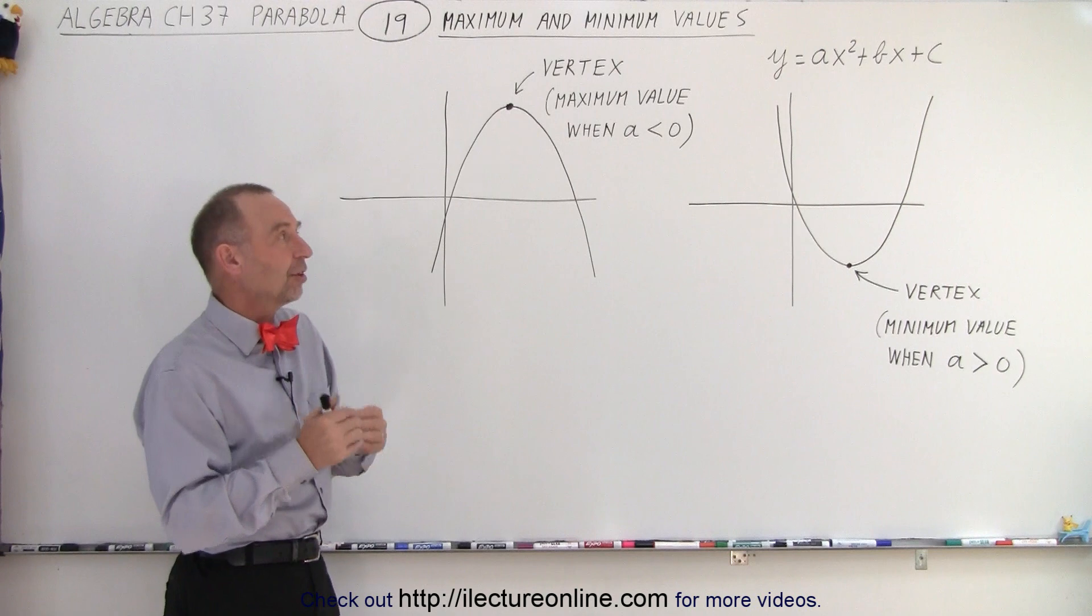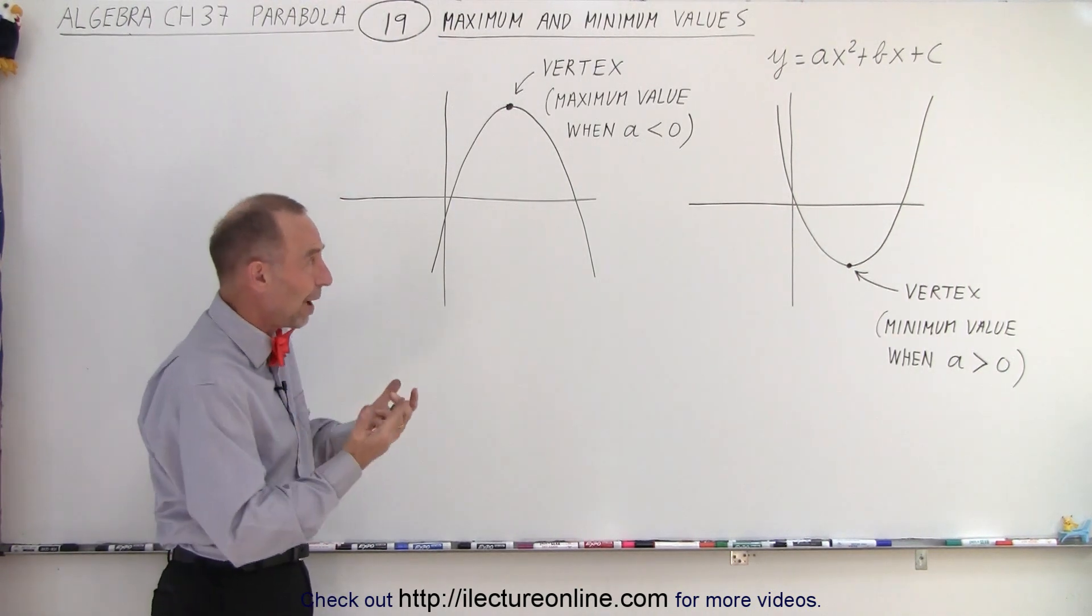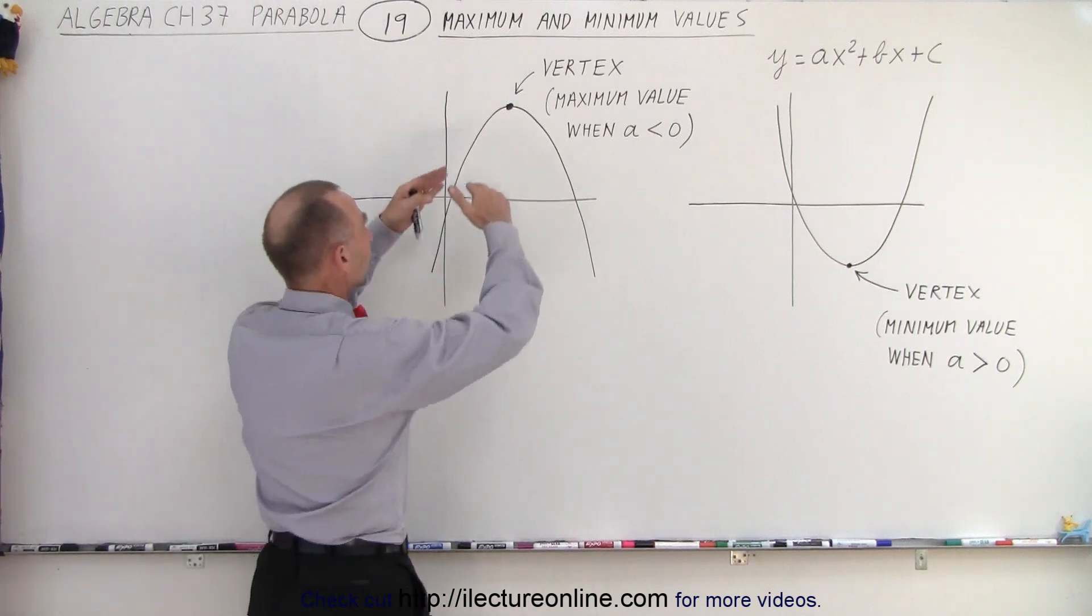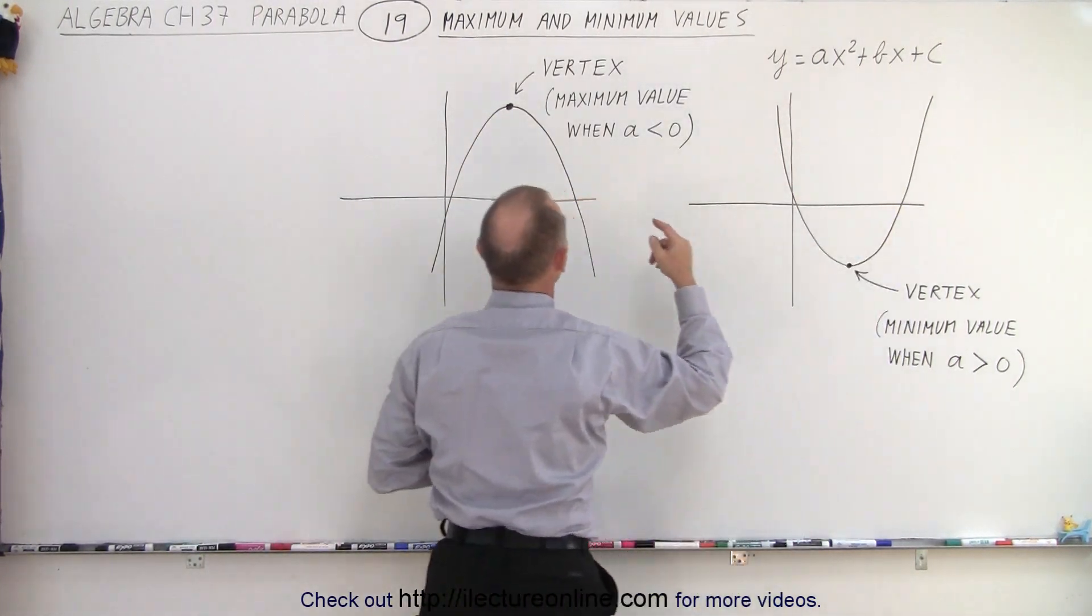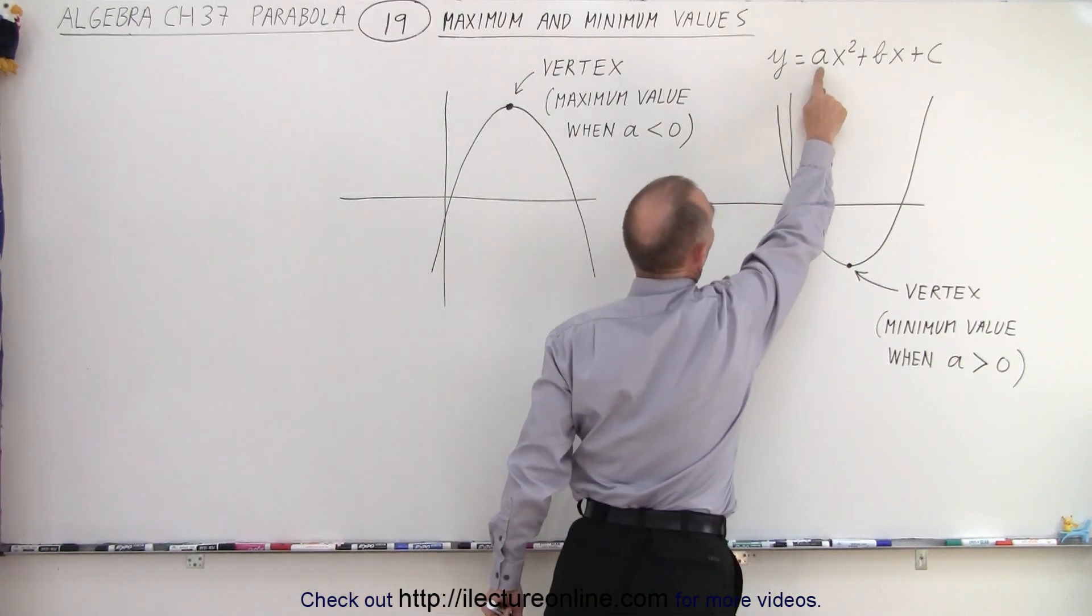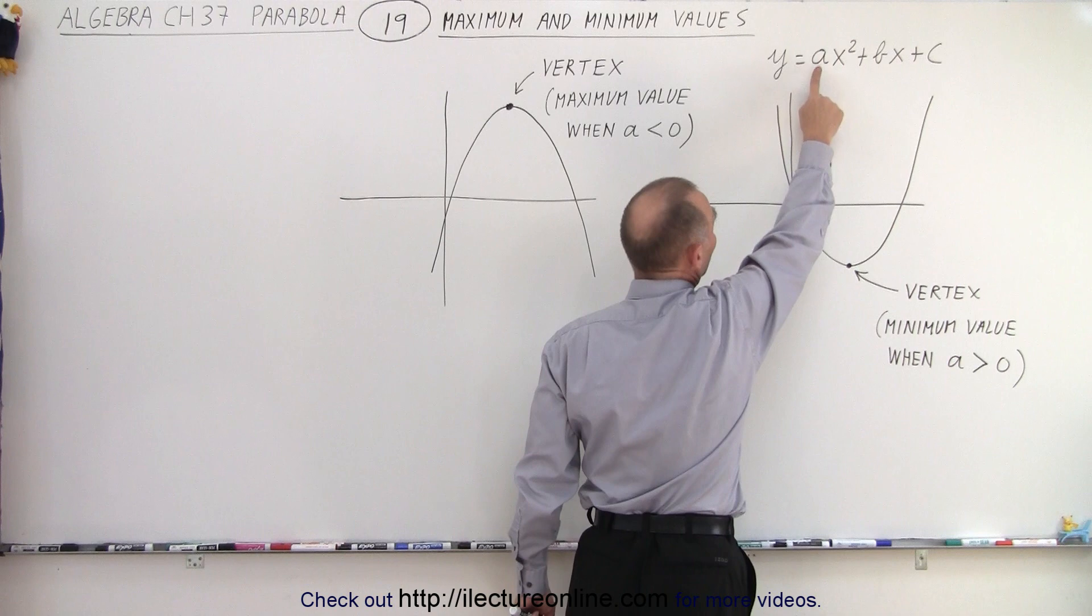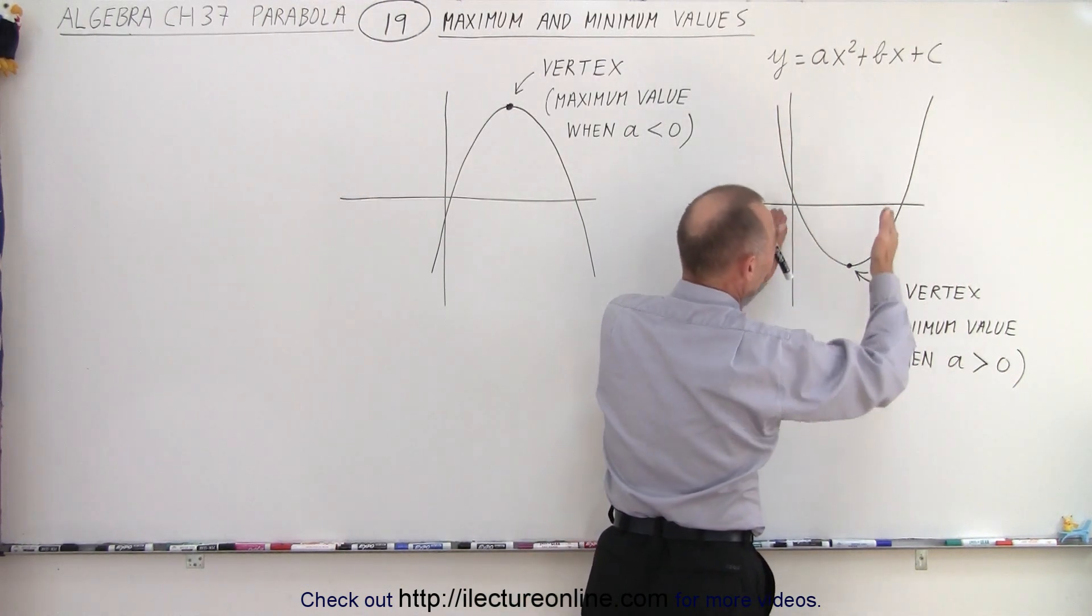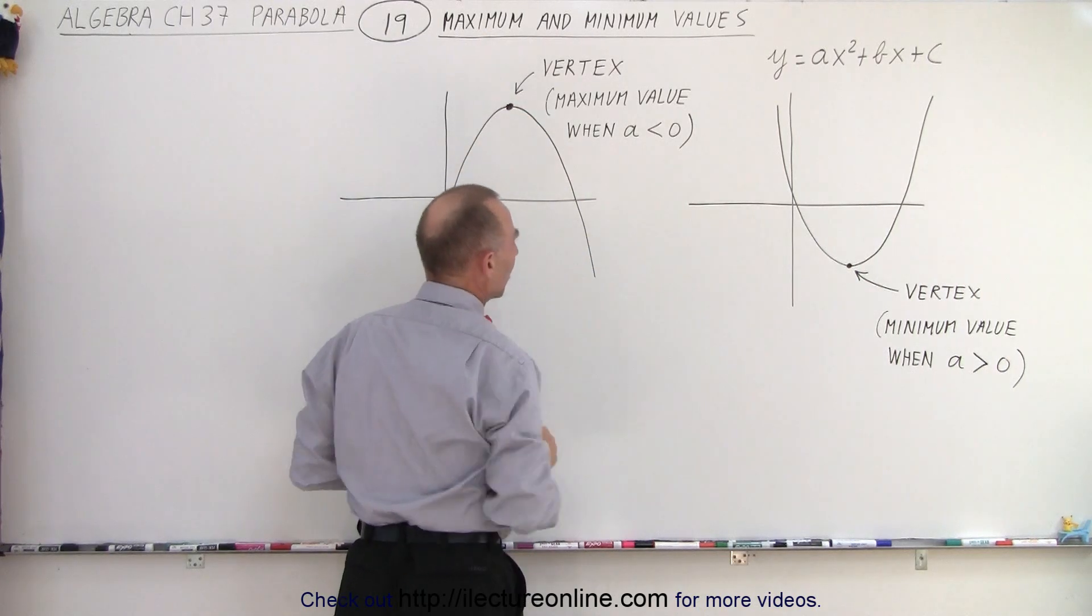But we need to understand the concept. We already understand that when we draw a parabola on a graph, either the parabola will open downward or the parabola will open upward. We can determine that by the value of the constant in front of the x-square term. If a is positive, then we know the parabola opens upward. If a is negative, then we know the parabola opens downward.